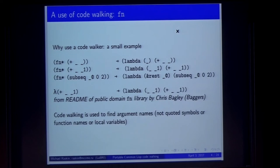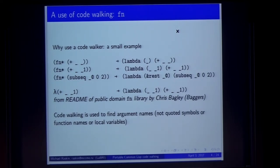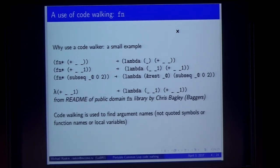Why would we want to use code walkers? The simplest example can be stolen from a code walking library called FN. The idea is that some lambdas are very simple, and the six letters of 'lambda' are already a large part of the lambda definition by volume. So it defines a way not to explicitly declare the parameter list, but to use underscores to show a pattern-matching parameter. These underscores are automatically collected into the parameter list. Code walking is used to find argument names — symbols used as variable names which are not local variables, not function calls, and not symbol macros. To implement this fully correctly you want to rely on code walking.